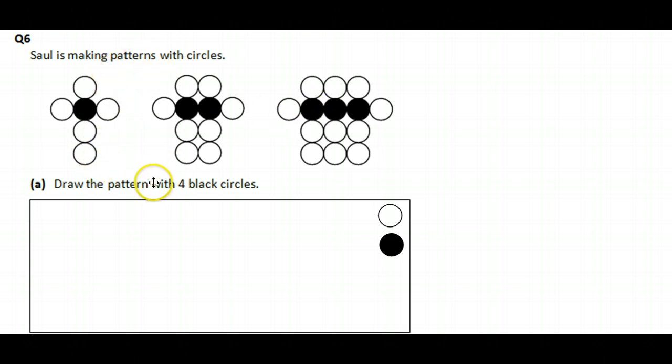It says Saul is making a pattern with some circles and draw the pattern with four black circles. Okay, well let's first draw out what happens to make the pattern. You start with a line, don't you? It's a line of circles. I'm not trying to be as straight as the diagram. And like that.